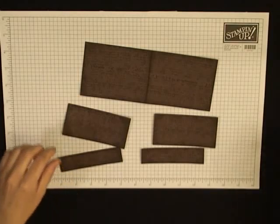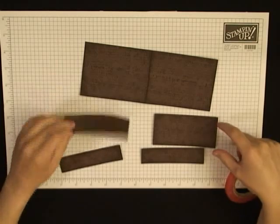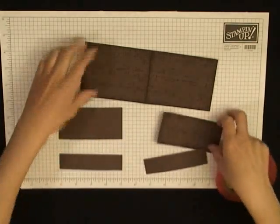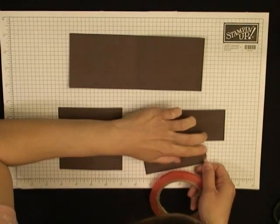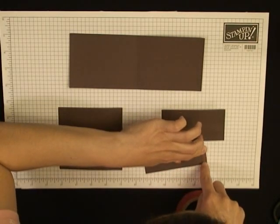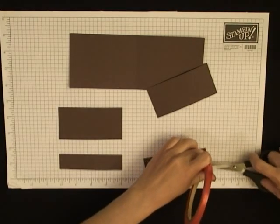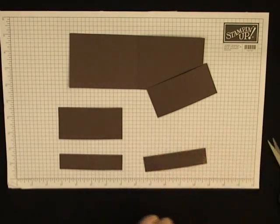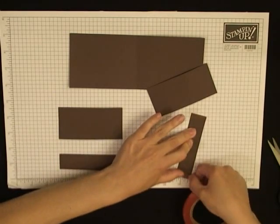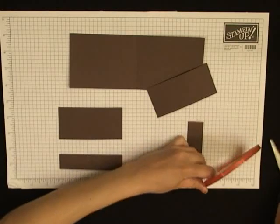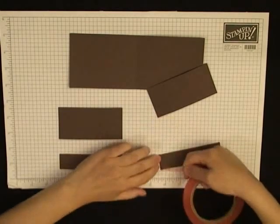It's time to add sticky strip. We're going to add it down both sides and across the bottom of all five pieces on the back. It's important when you're adding the sticky strip to make sure that you get it as close to the edges as you can so that when you put this all together you're able to still fit the gift card into the pocket.